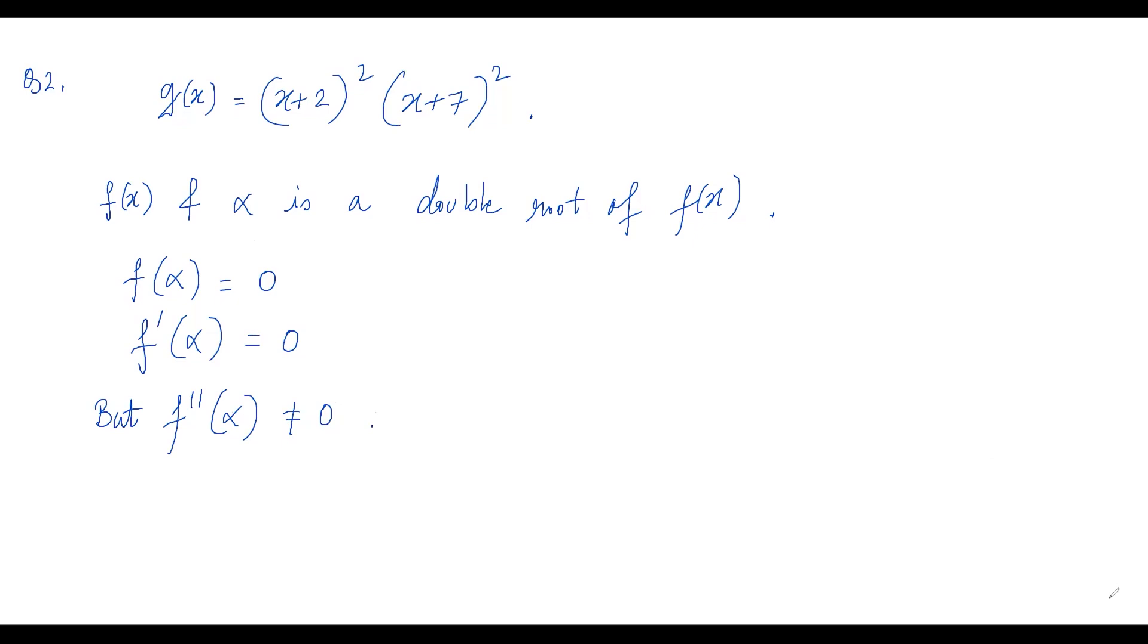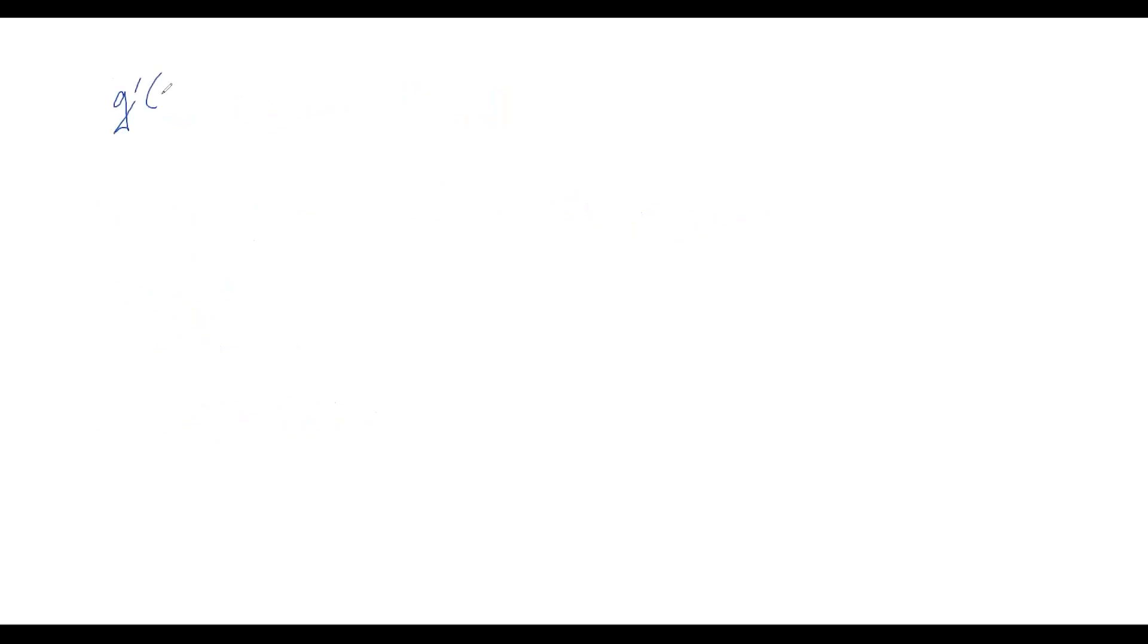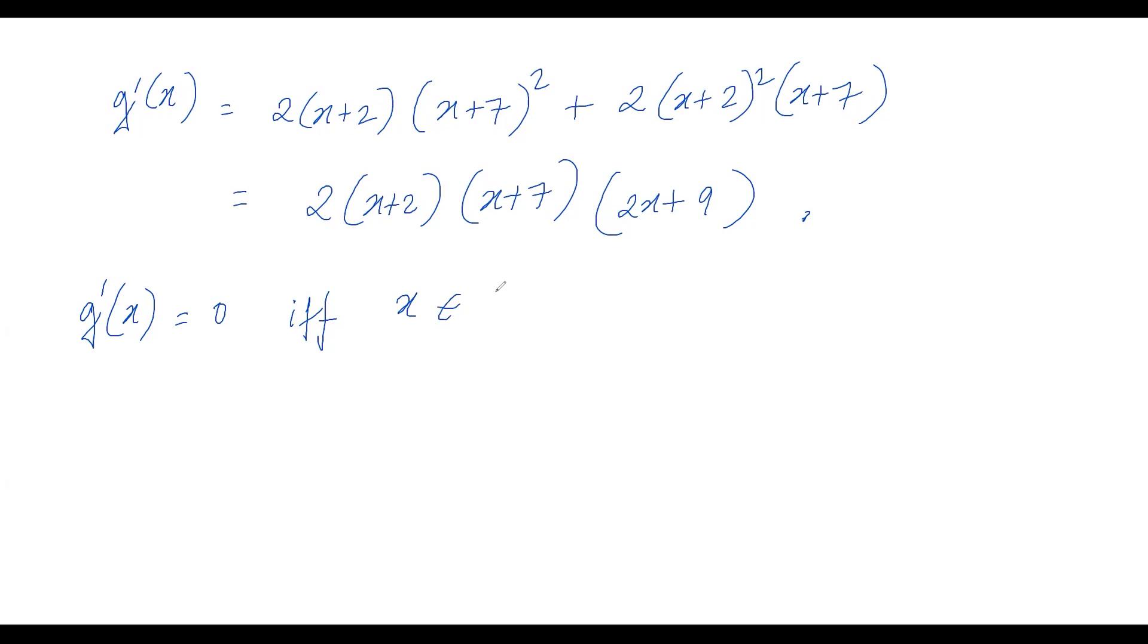So if we differentiate g(x), g'(x) is equal to 2(x+2)(x+7)² + 2(x+2)²(x+7), which is equal to 2(x+2)(x+7)(2x+9). And so g'(x) equals zero if and only if x is...